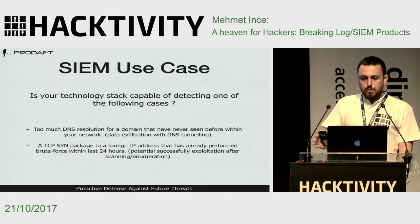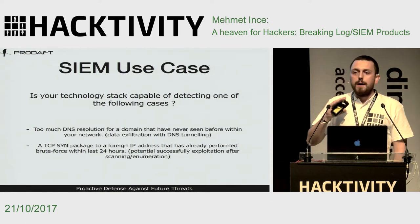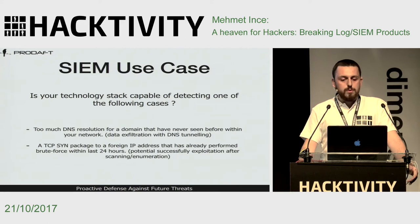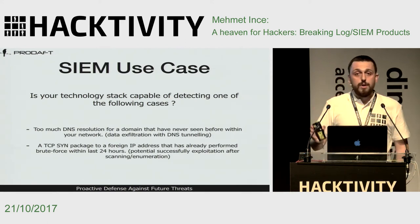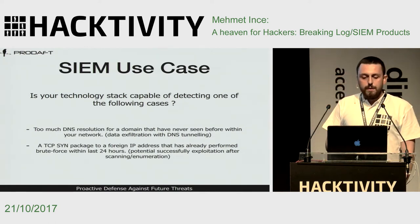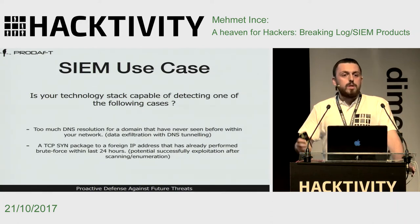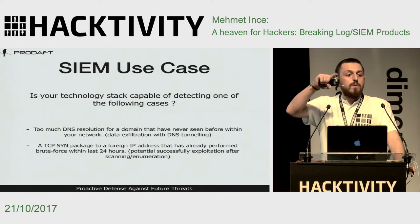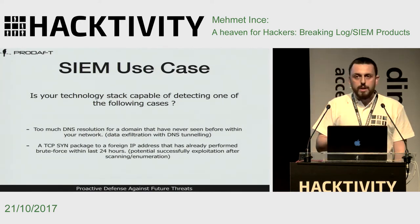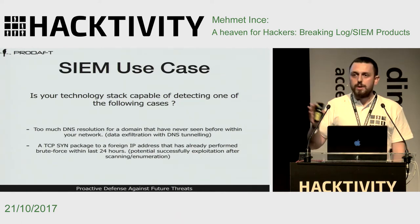The easiest way to understand these products is through SIEM use cases. For example, someone accesses an internal server and wants to exfiltrate data — DNS tunneling could be used for that. It's important to understand lots of DNS resolutions for domains you've never seen. Another example: someone performs brute force and network enumeration from the internet, and one of your servers later tries to connect back to the attacker's IP — a potential successful exploitation.